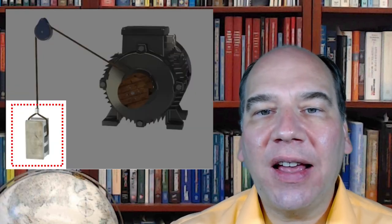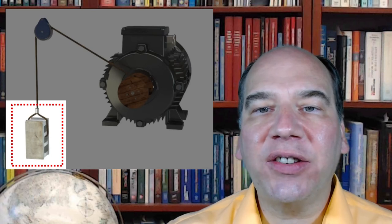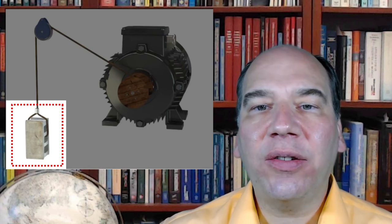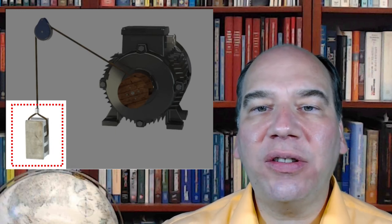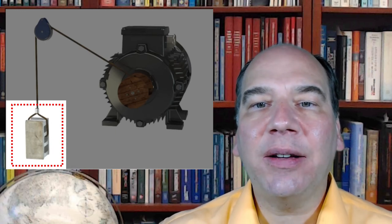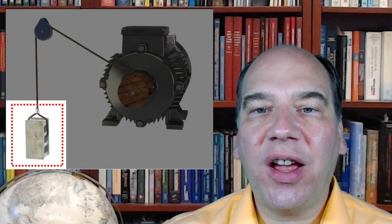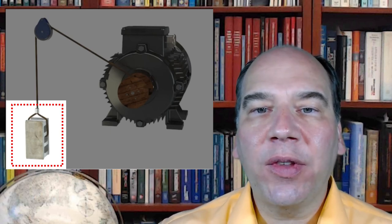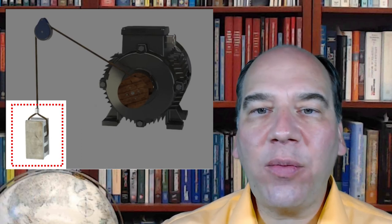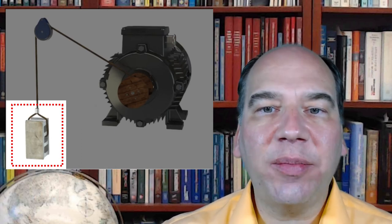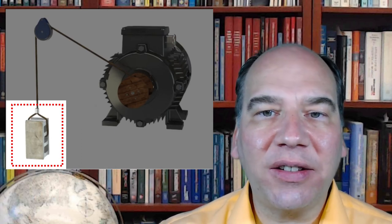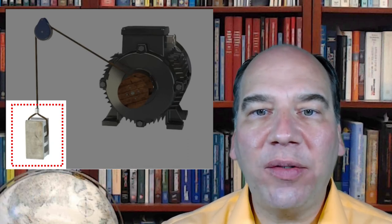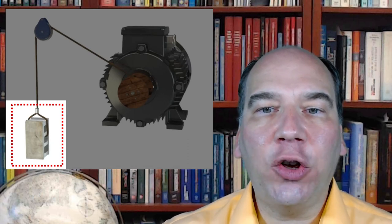Now let's suppose that pulley is a little more realistic — no longer frictionless. Going from initial to final state, what's the change in gravitational potential energy and what's the work interaction? It's still exactly 100 joules in both cases, because that pulley is out in the surroundings and so we don't care about it — we're focused on the system as we've drawn it.